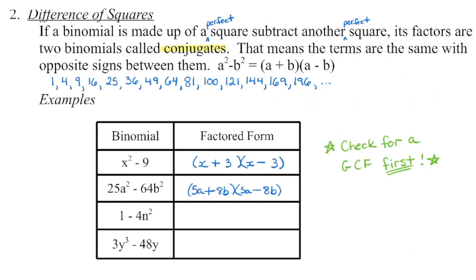Here's the most common mistake: people forget that 1 is a perfect square. You've got to recognize that. There is no greatest common factor, so we can go right into setting up our conjugates. The square root of 1 is 1. The square root of 4n squared is 2n. Quickly FOIL it back to make sure you get what we started with.